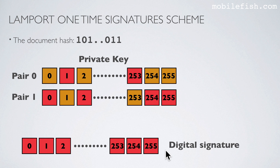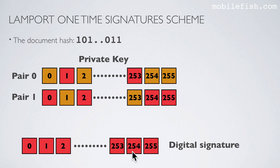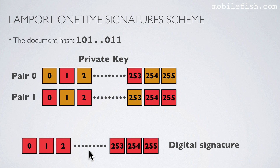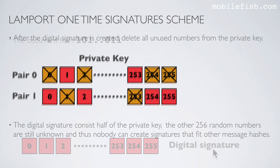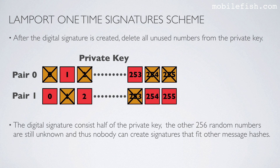The digital signature consists of 256 numbers — half of the private key. The private key consists of 512 numbers in total, but only half is used in the digital signature. After the digital signature is created, delete all unused numbers from the private key. The other 256 random numbers are still unknown, and thus nobody can create signatures that fit other message hashes.